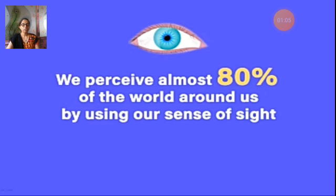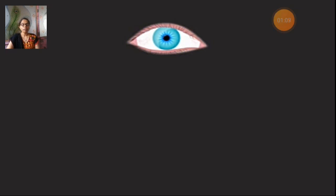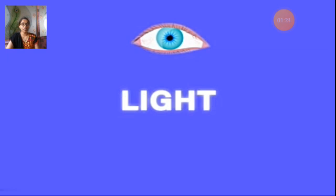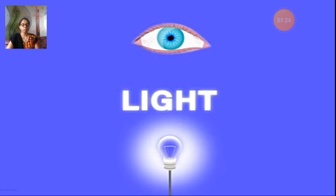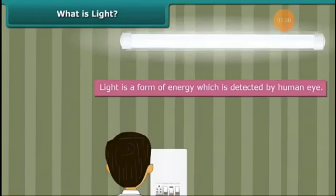We see objects around us with our eyes. When we are in the dark, why don't we see these objects? The answer to this question is light. We are able to see the objects around us because of the light.